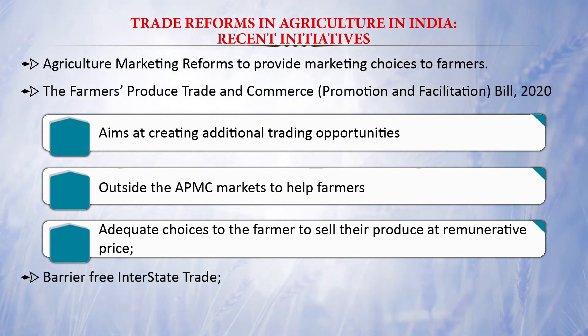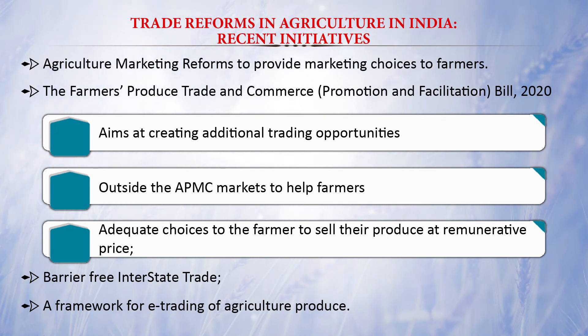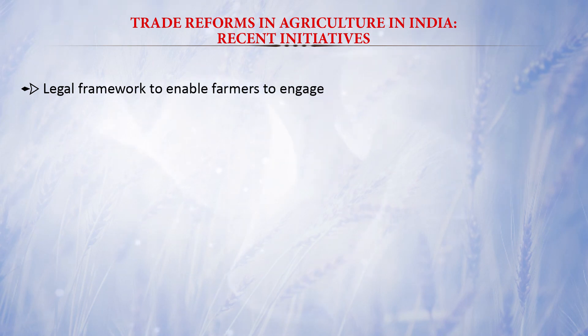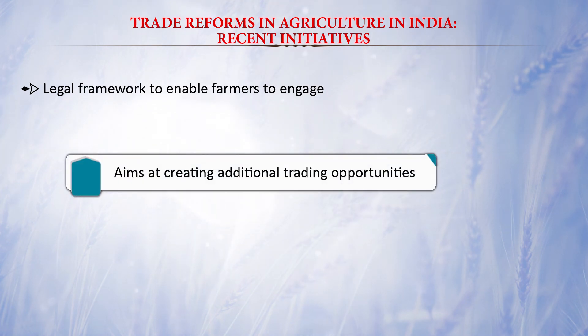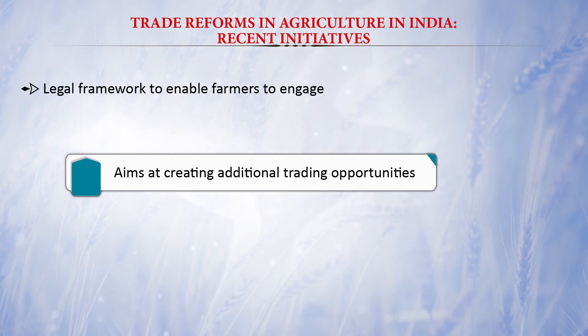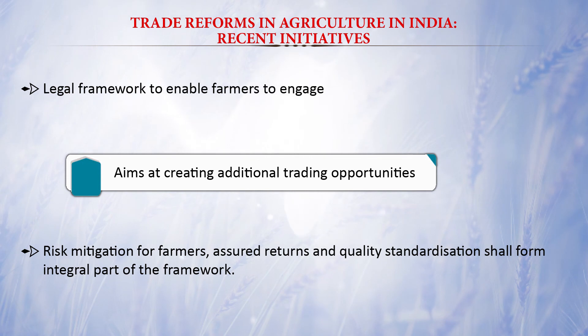A framework is also being developed for trading of agriculture produce across the country. The Farmers' Empowerment and Protection Agreement on Price Assurance and Farmers' Services Bill 2020 provides a legal framework enabling farmers to engage with processors, aggregators, large retailers, and exporters in a fair and transparent manner. This bill provides risk mitigation for farmers, assures returns, and makes quality standardization an integral part of the framework.